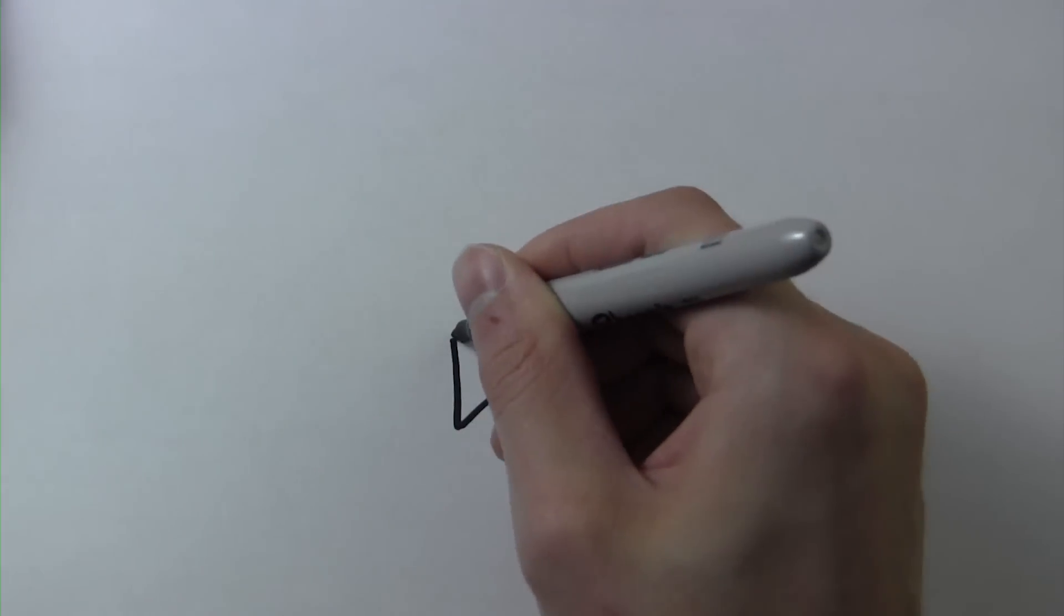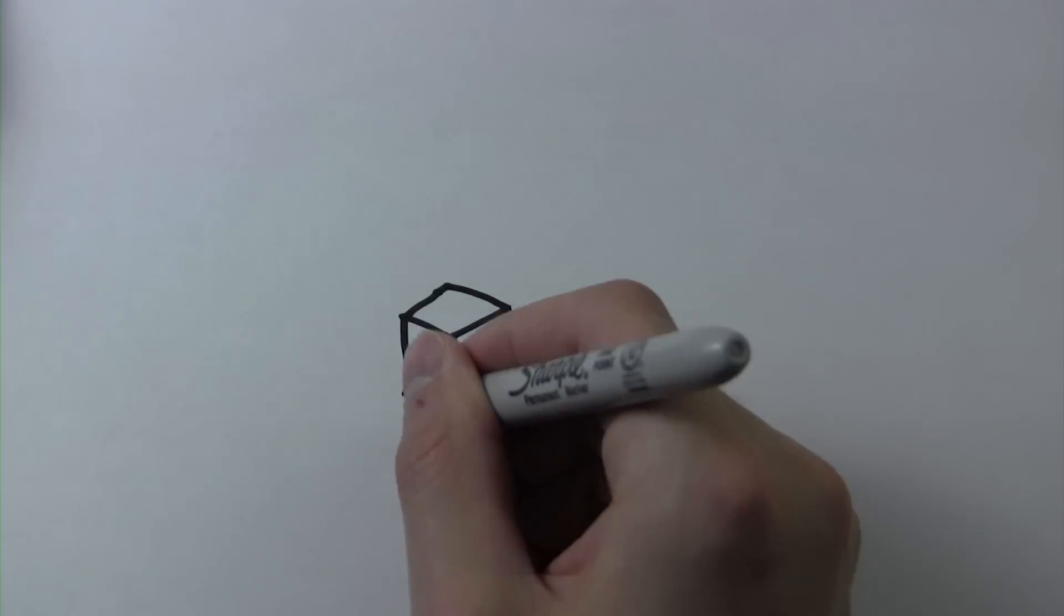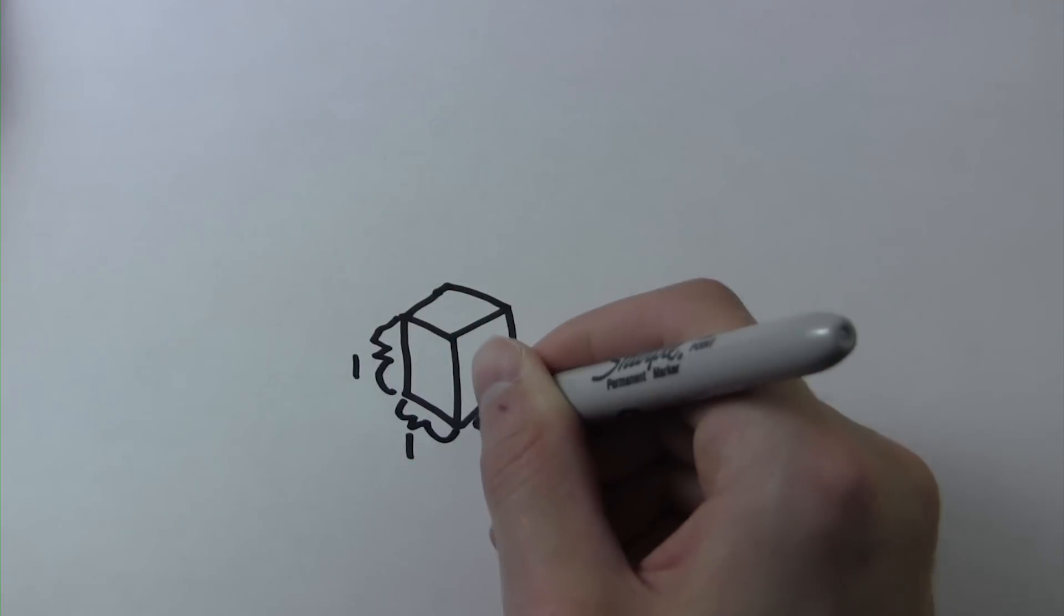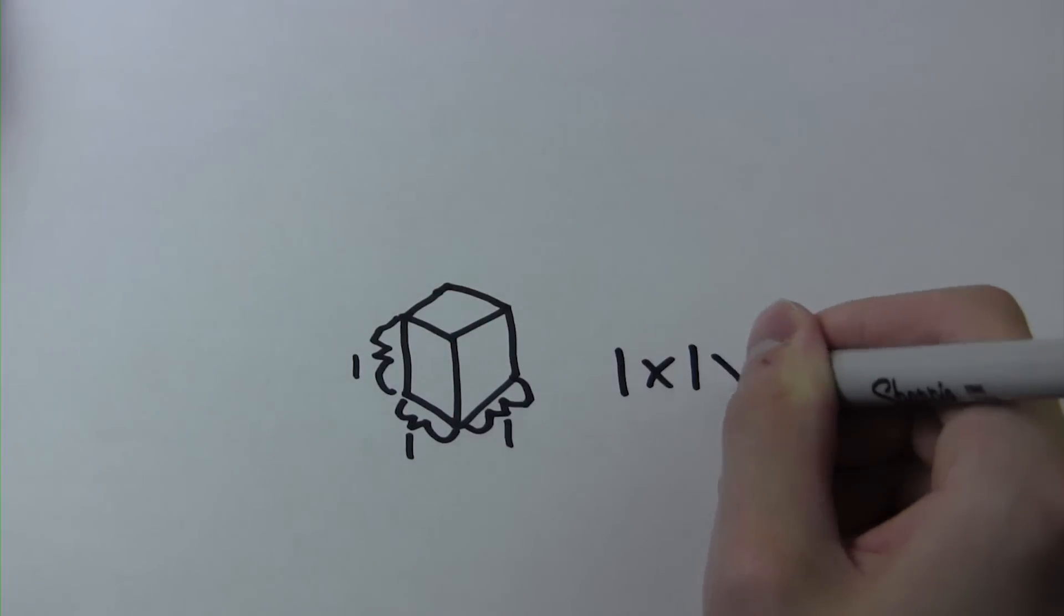Volume is the quantity of space enclosed by a three-dimensional boundary. For example, if we had a one inch by one inch by one inch cube, the total volume would be one inch.